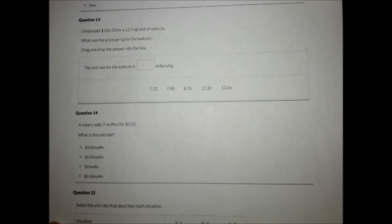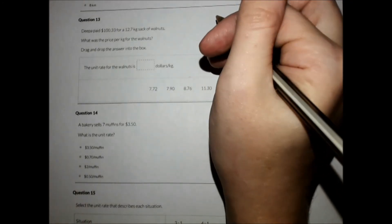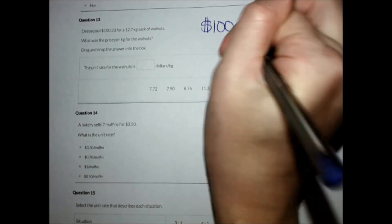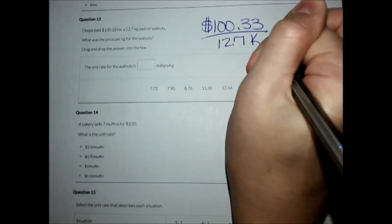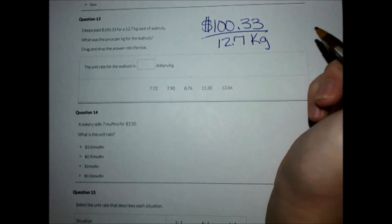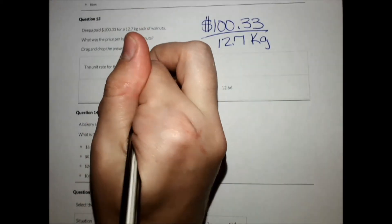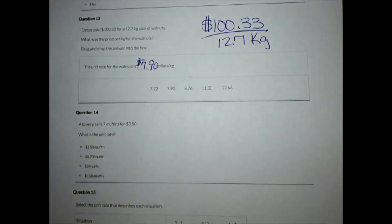Number 13. Depa paid $100.33 for a 12.7 kilogram sack of walnuts. What is the price per kilogram? So all you're going to do is divide $100.33 divided by 12.7, and you do get $7.90 per kilogram.